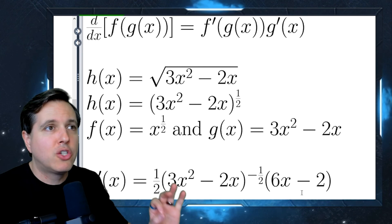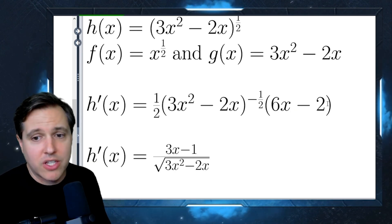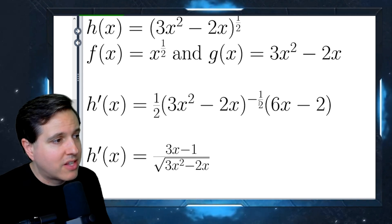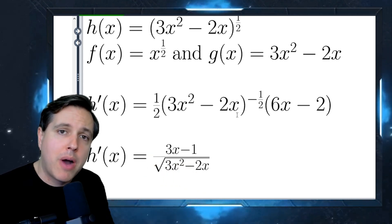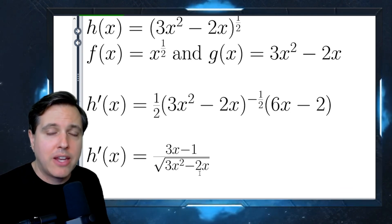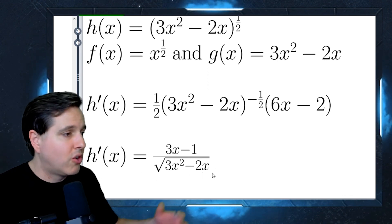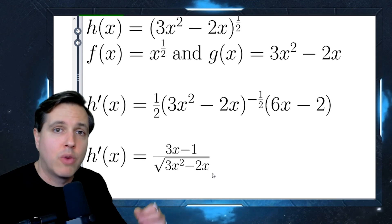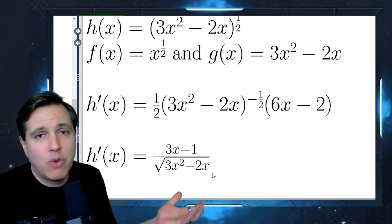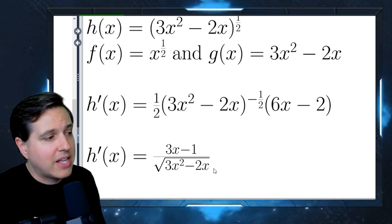Technically we've found the derivative, but it's sloppy to leave it that way. The one-half times (6x - 2) gives us (3x - 1) in the numerator. Then (3x² - 2x) to the negative one-half moves into the denominator as (3x² - 2x) to the positive one-half, which we can write as a square root. Whether you leave your final answer with a rational exponent or a square root doesn't matter — it depends on what's more convenient for the problem you're working on.